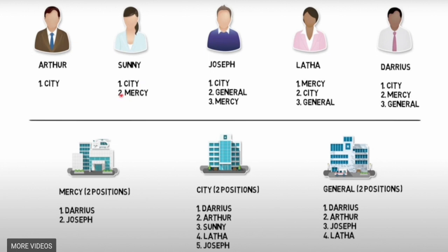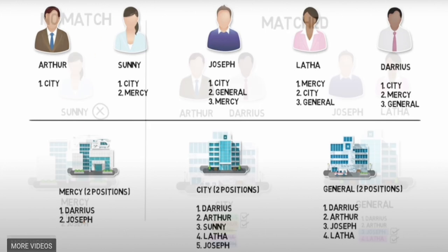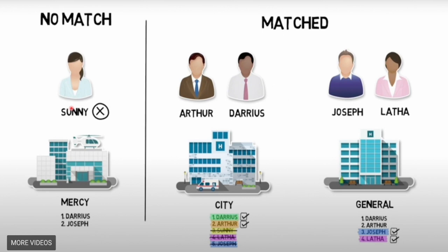So Sonny can't match at her most preferred program. The system goes down to her second most preferred program, Mercy — but unfortunately Mercy doesn't have Sonny in their preferred list, meaning Sonny was excluded after interviewing and didn't match. The key lesson here is to put as many programs on your rank order list as you can. If you only put two, you're decreasing your chances of matching, like Sonny did.